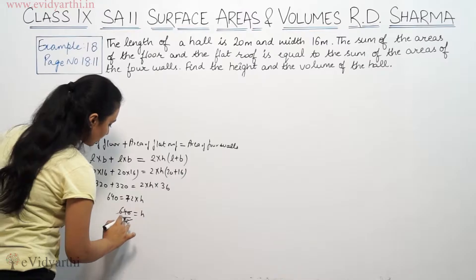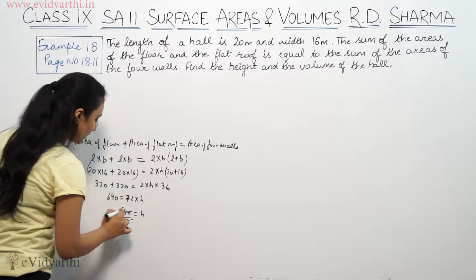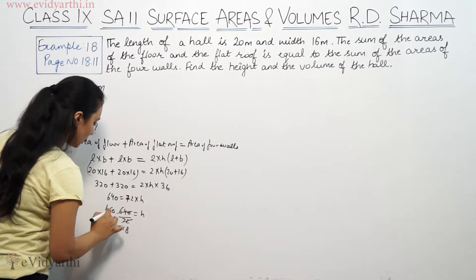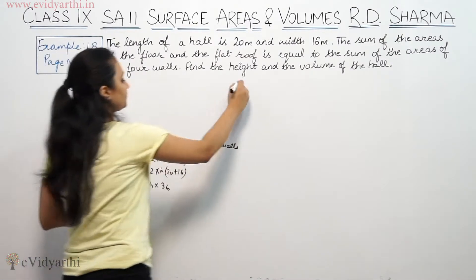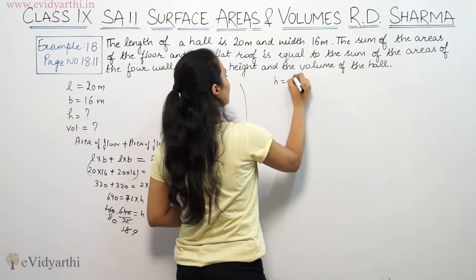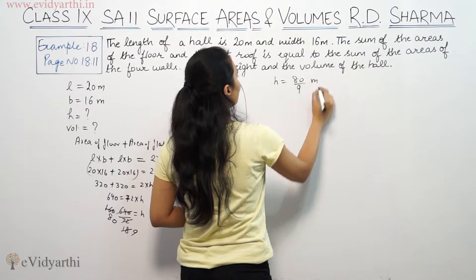Dividing, we get 80 by 9. So, height is equal to 80 by 9 meters.